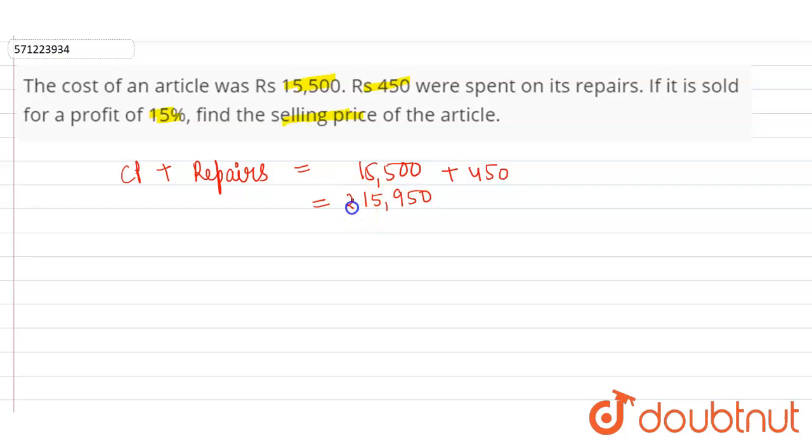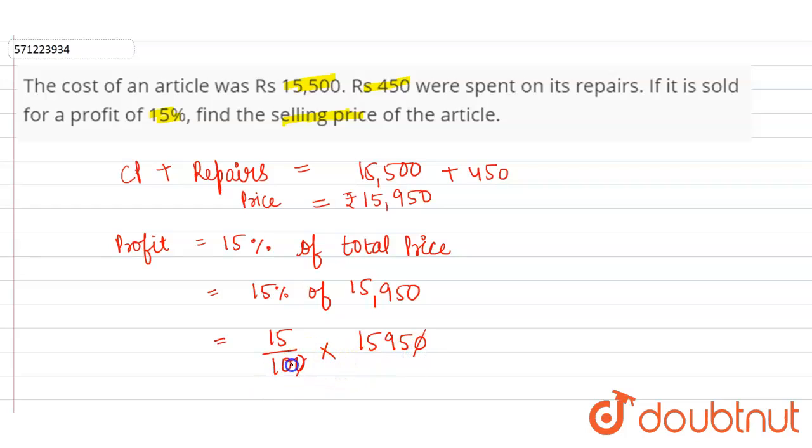This is the price of the article. Now profit is given: 15%. So 15% of what? 15% of total price, which is 15% of 15,950. So this is equal to 15 divided by 100 multiplied by 15,950.